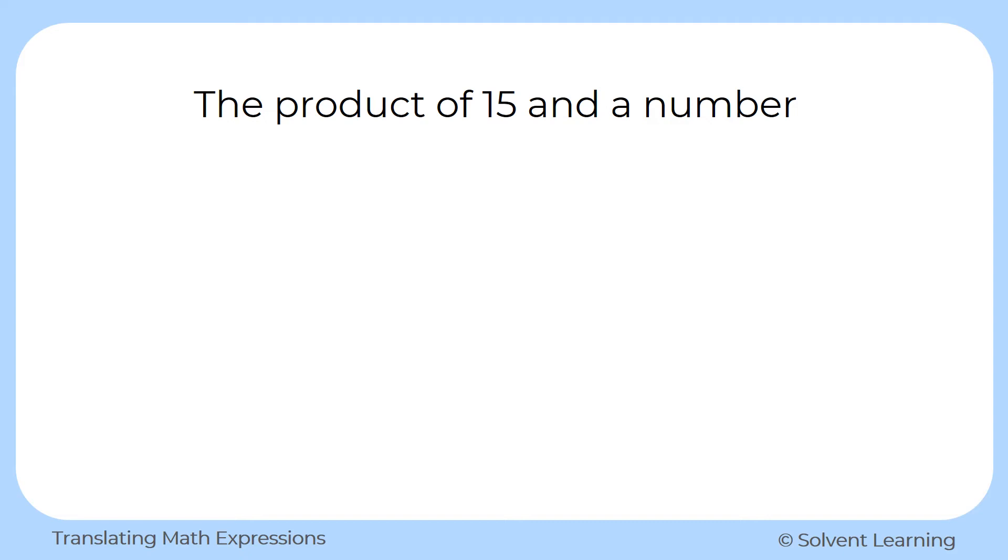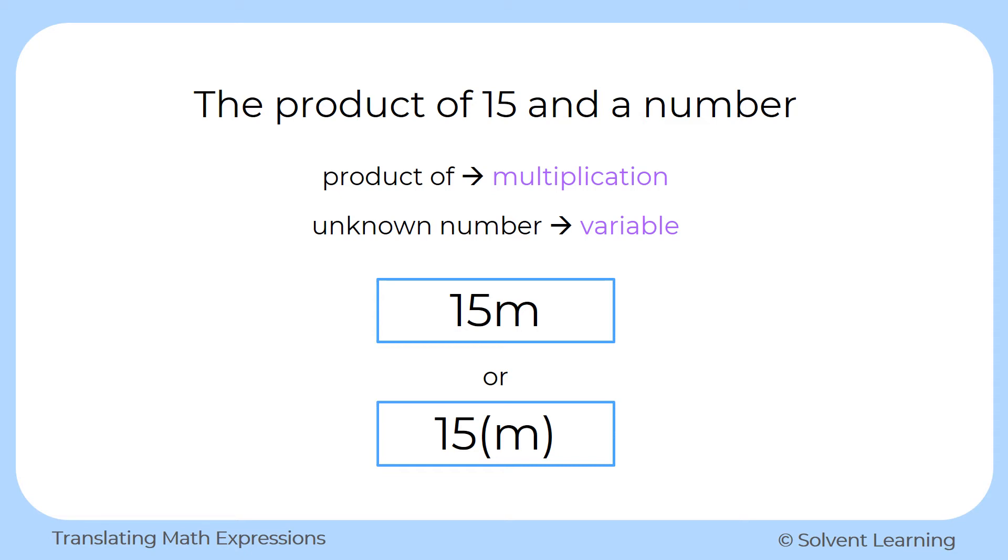Next, we have the product of 15 and a number. Product of refers to multiplication. And once again, we have an unknown number that we'll represent with a variable. So we can show 15 times m to represent the product of 15 and our variable. With multiplication, you can also use parentheses around the number or the variable. So you could also represent it as 15 parentheses, and then the variable inside the parentheses.